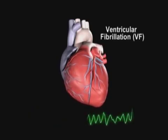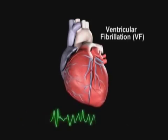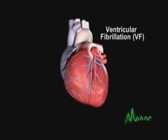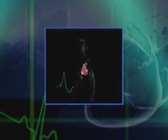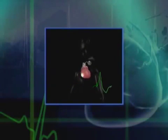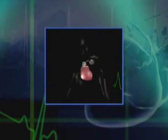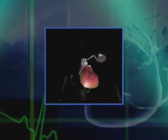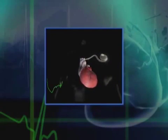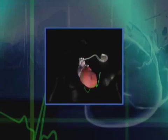What a defibrillator does is it's constantly monitoring on a beat-to-beat basis the heart rhythm. And if the heart rhythm suddenly becomes abnormal, the device will detect that abnormality and will do one of two things. In some cases it can actually pace the heart back to a normal beat, and sometimes a patient might not even feel it.